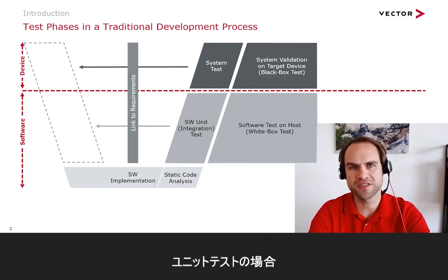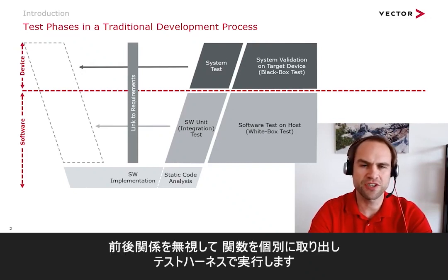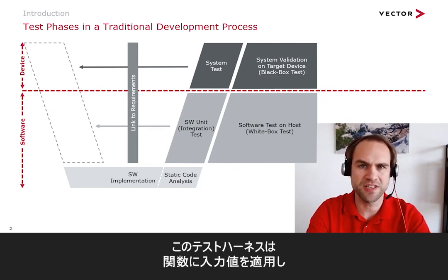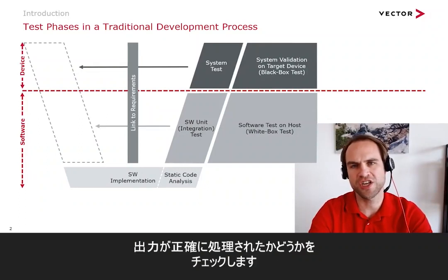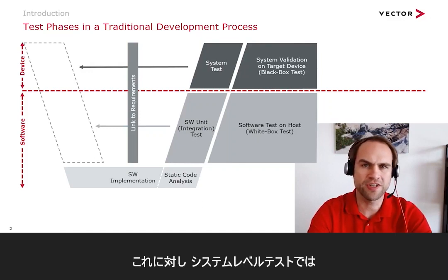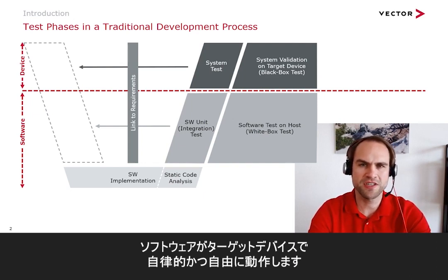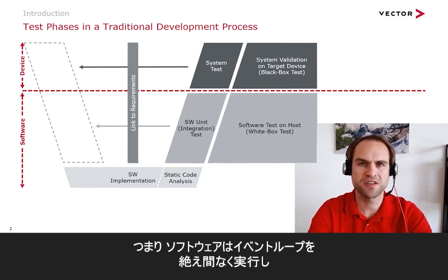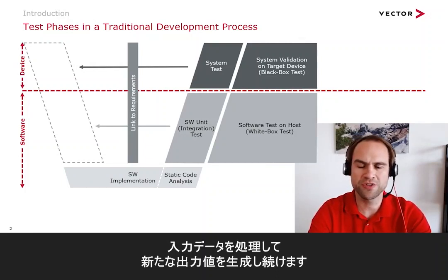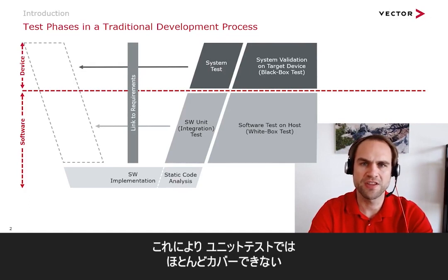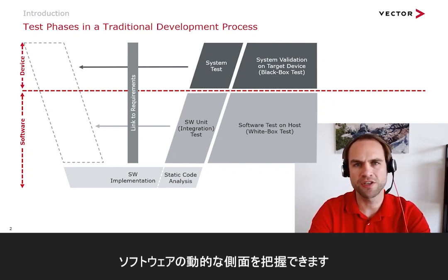If you think about unit tests, you take an individual function out of its context and run it in some test harness. This test harness applies input values to the functions and checks if the output was processed correctly. On the other hand, when you think about system level tests, your software runs autonomously and freely on the target device, continuously executing its event loop, processing input data and generating new output values — thus having some dynamic aspects which can hardly be covered by unit tests.